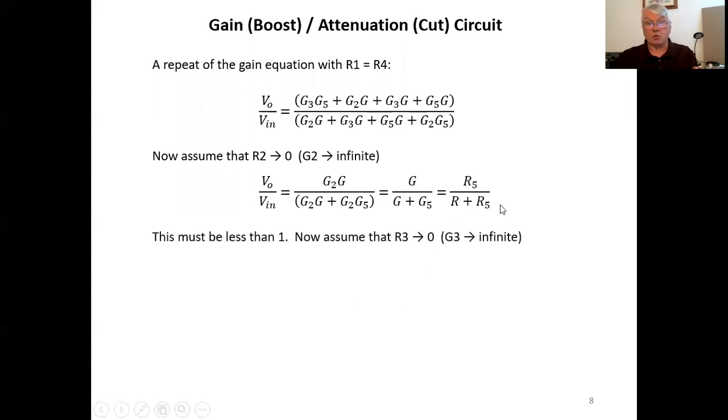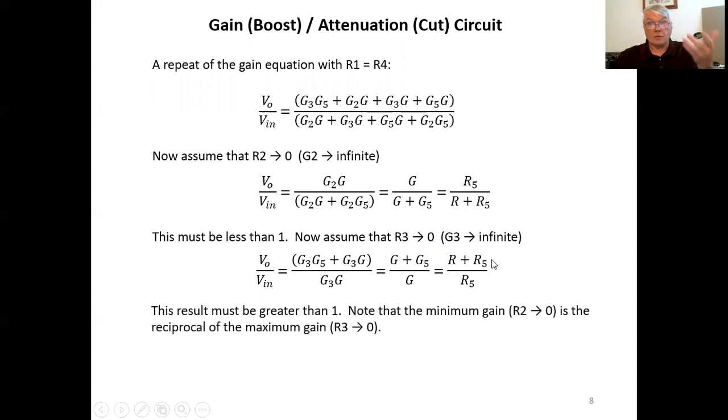Now let's assume that r three goes to zero, we'll let g three then go to infinity. And we get this expression, the voltage gain goes to r plus r five over r five, that gain has to be greater than one. And notice that the minimum gain here and the maximum gain are reciprocals of each other. Okay.